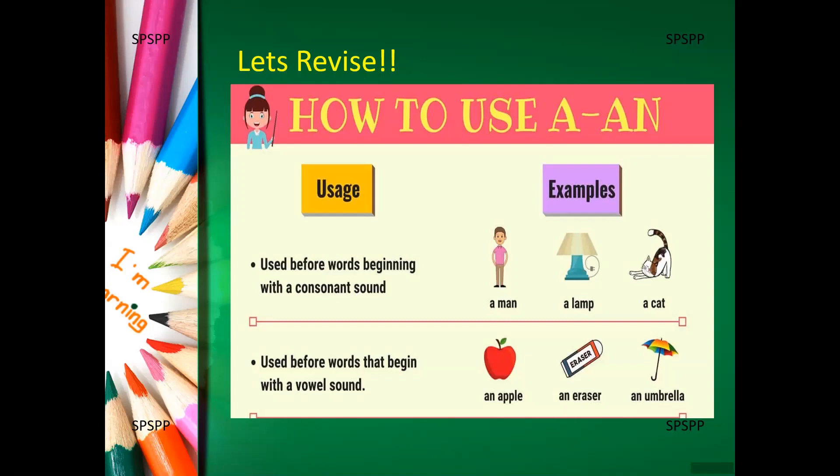A man, a lamb, a cat. Where do we use an? Yes, an is used before the words that begin with the vowel. Look at the examples. An apple, an eraser, an umbrella.